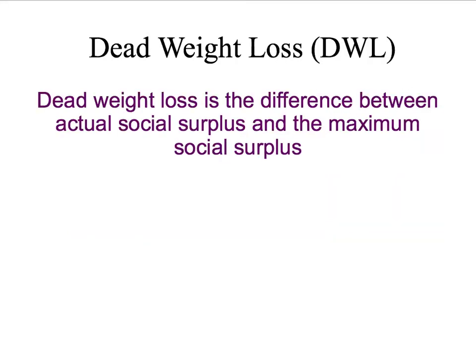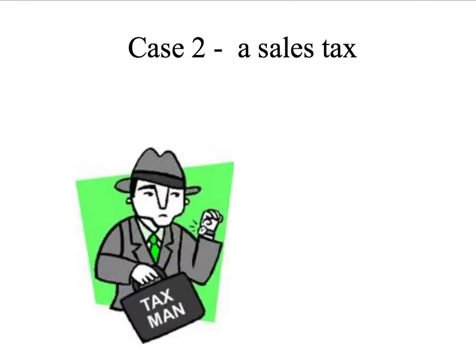However, we're still not going to have any external costs or benefits. So our touchstone for the maximum social surplus will still be our perfectly competitive model. We're going to start at our perfectly competitive equilibrium and look at the effects of a sales tax — who wins, who loses, and what is the deadweight loss, i.e. the reduction of social surplus compared to the perfectly competitive equilibrium. So let's get started at looking at what happens when the tax man comes to call.